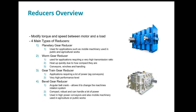Worm gear reducers are generally used for applications requiring very high transmission ratios. The mechanism is non-reversible, meaning the worm wheel cannot drive the worm. The advantage of this non-reversible mechanism is that it ensures a greater level of security for the system. Worm gear reducers are less expensive than planetary gearboxes and are also quieter. Like planetary gearboxes, worm gear reducers heat up quickly due to how compact they are and have variable performance levels. These are generally used for conveyors, winches, and handling.